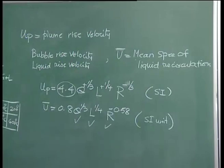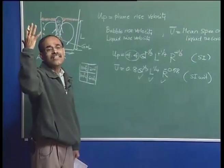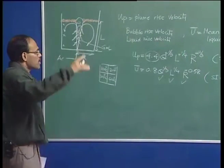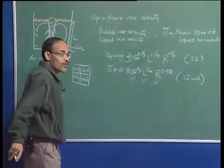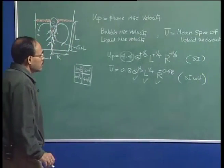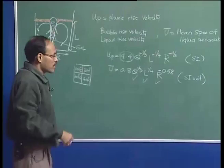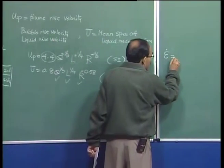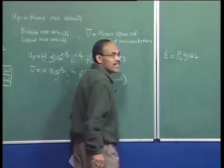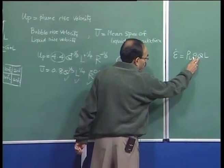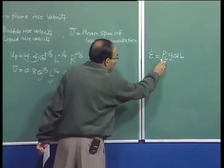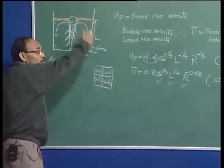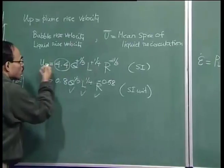These correlations apply under typical ladle metallurgy conditions, not for very large flow rates or extremely shallow or tall vessels. The potential energy input rate, epsilon-dot, equals rho-liquid times g times Q times L. Increasing the gas volumetric flow rate or the depth of liquid increases the rate of energy supply when rho-L is constant. More energy means more rate of recirculation, which is reflected in the plume rise velocity formula as well.